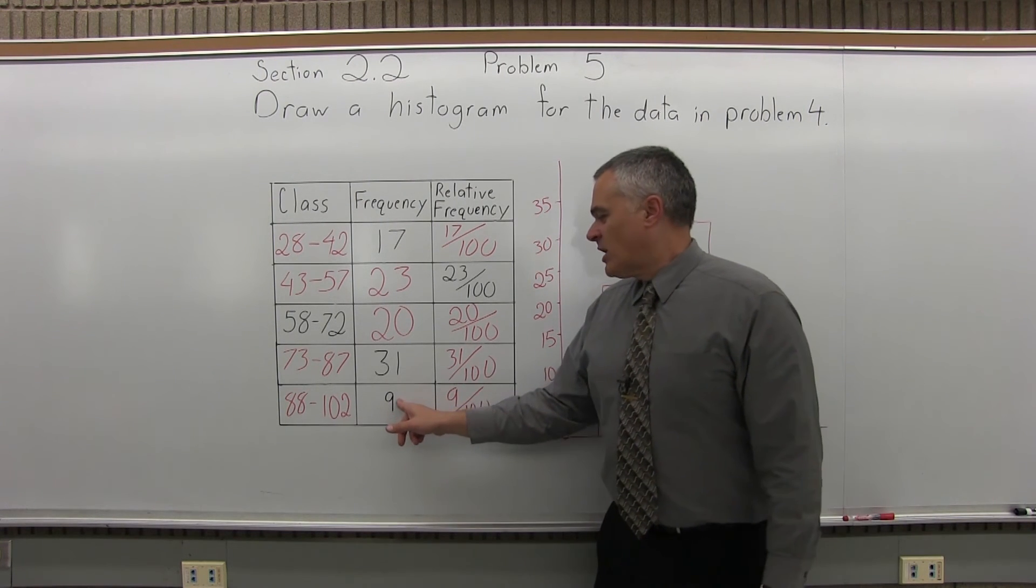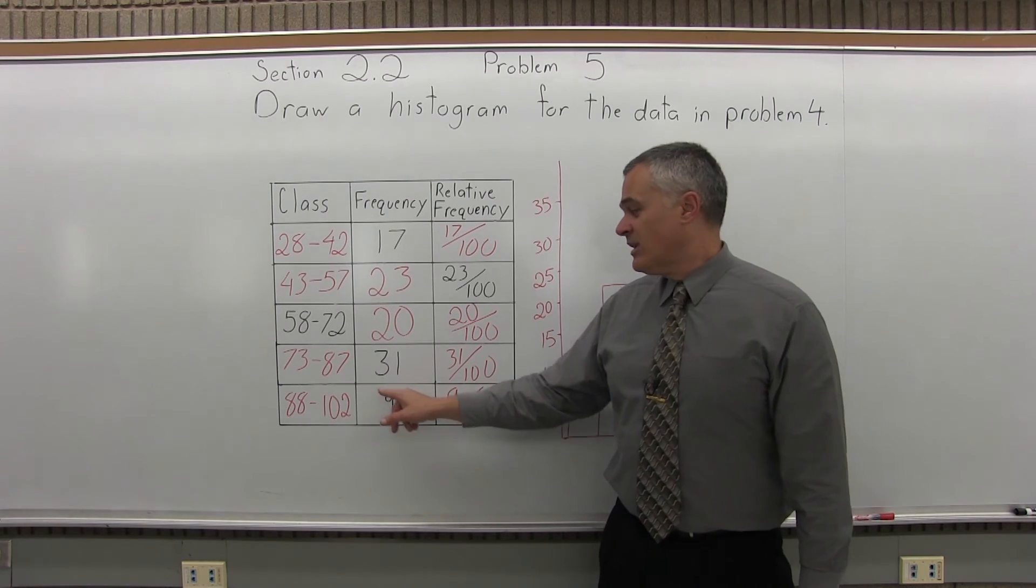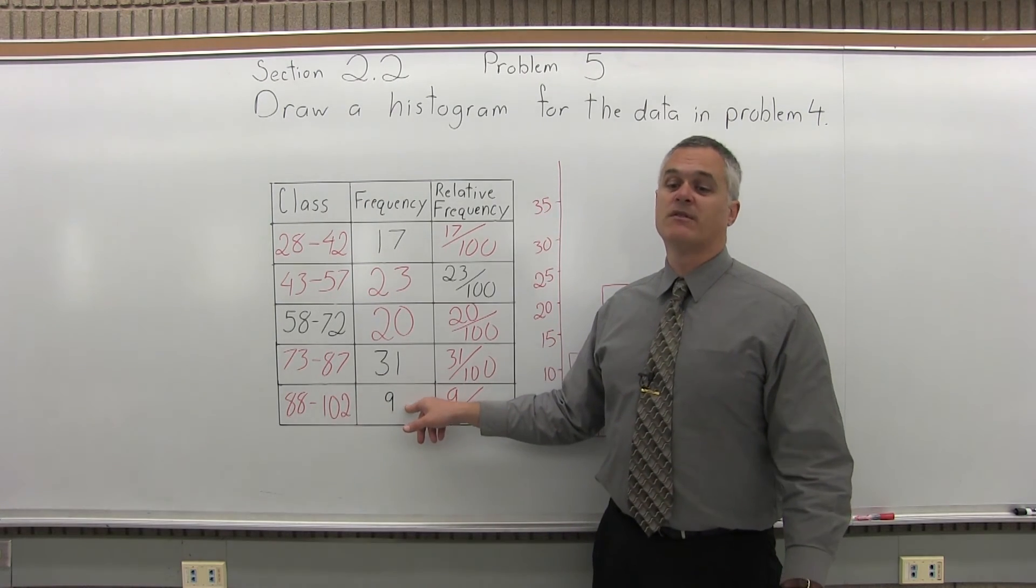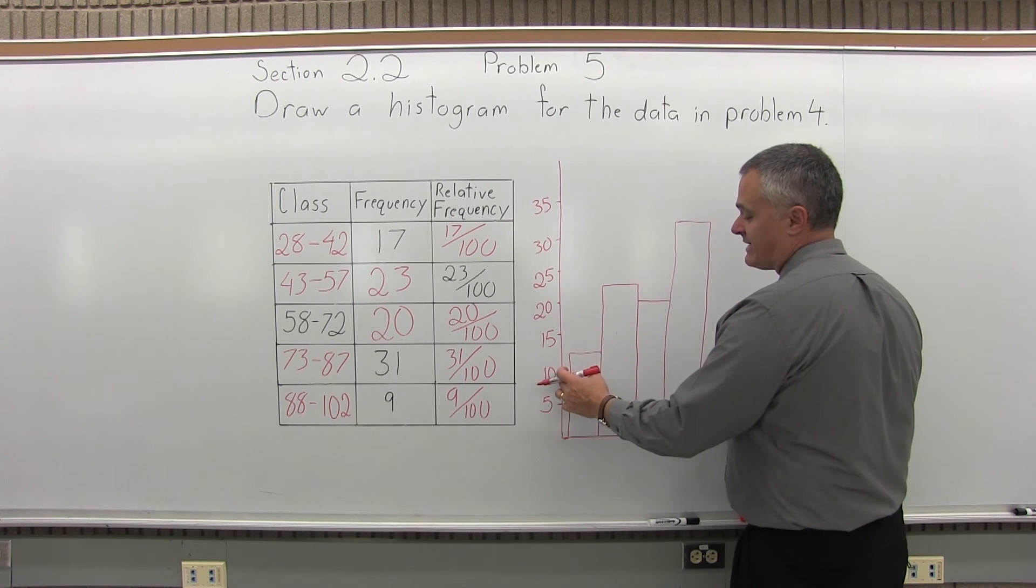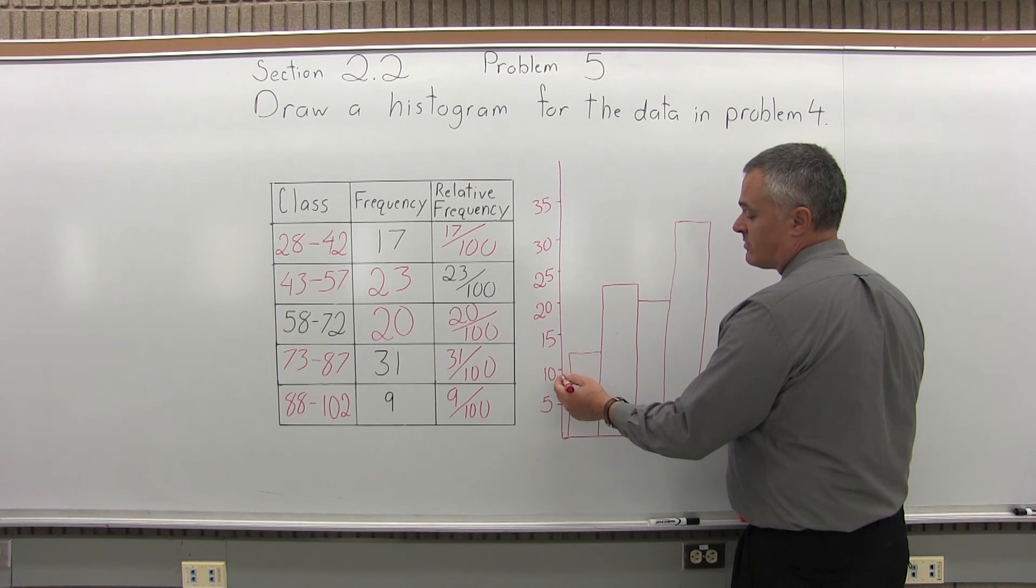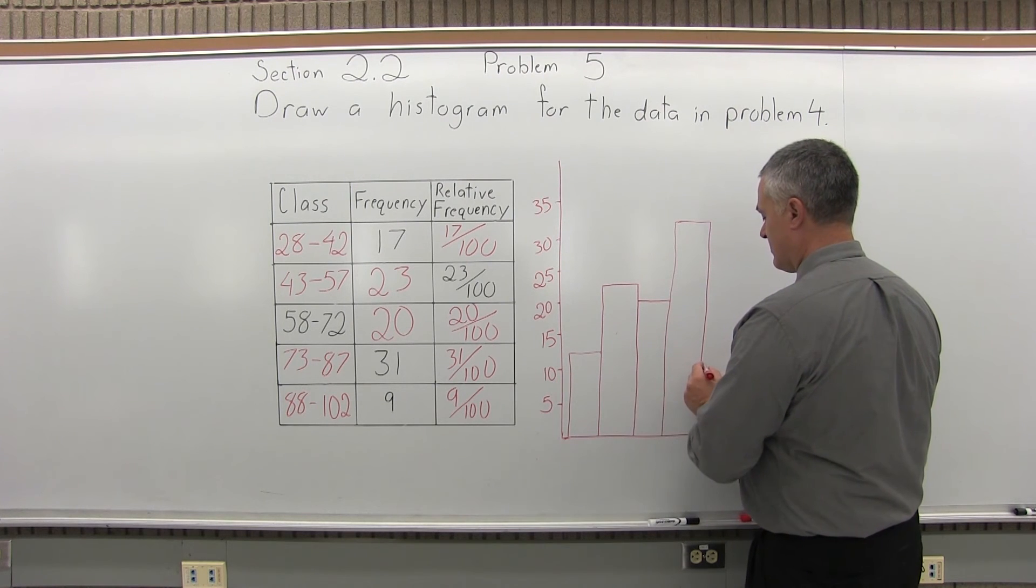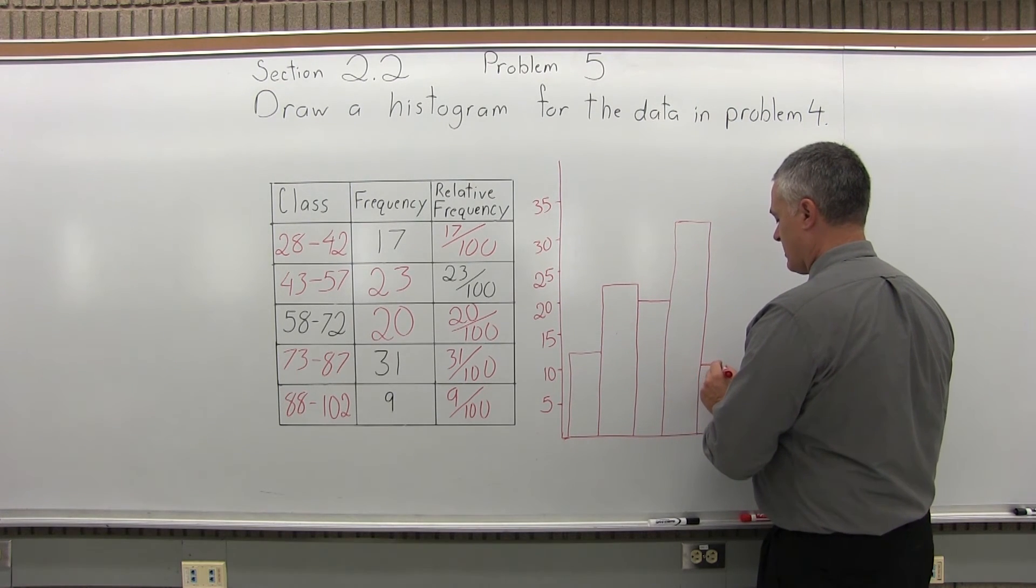And again, I'll continue the edge of the previous bar up to that height of 31. And finally, the last bar has a frequent, the last class has a frequency of 9. So, the last bar will have a height of 9. Now, like some of the others, I don't have 9 exactly on the number scale. But you can figure it would be a little less than the 10 in terms of its height. About like that.